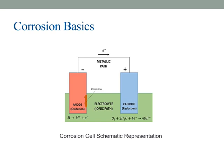This electrochemical process creates a flow of electrons between these two points, which leads to material degradation over time. Understanding this schematic helps us grasp the fundamental mechanics of corrosion — how it starts, spreads, and how different factors can influence its rate. When we think about corrosion prevention, we're essentially aiming to interrupt or modify this electrochemical process.